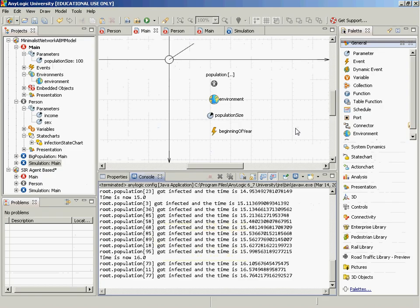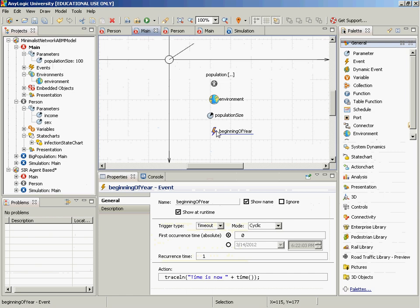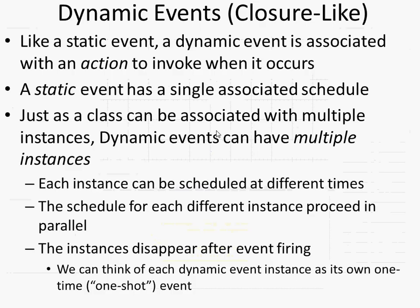That's a static event — beginning of year. It has one schedule for that particular event. Every time it wakes up it puts down a new one for one year later. It's a static event — there are not multiple copies of it. Dynamic events, like static events, are associated with actions to invoke when they occur. Static events have only a single associated schedule. But a dynamic event, just like a person class can have multiple instances, can have multiple instances. Each instance can be scheduled at different times, the schedules proceed in parallel, and the instances disappear after the event fires.